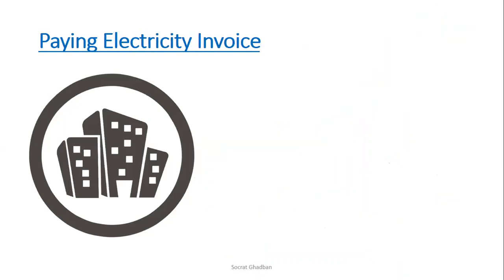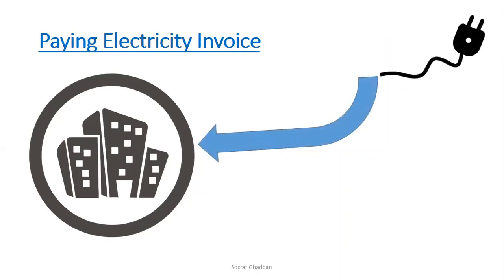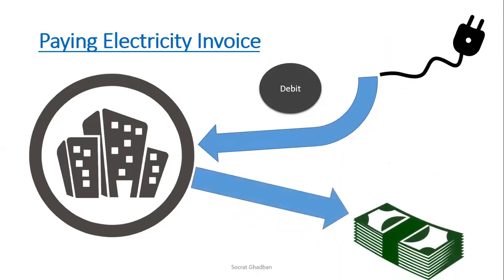Another example is the company paying an electricity invoice. The company is consuming electricity, so electricity is entering the company. This is why it's debit. Electricity is part of utilities and part of expense, so the normal balance of an expense is debit, meaning it increases with debit. In return, the company is paying cash, so it is credit.